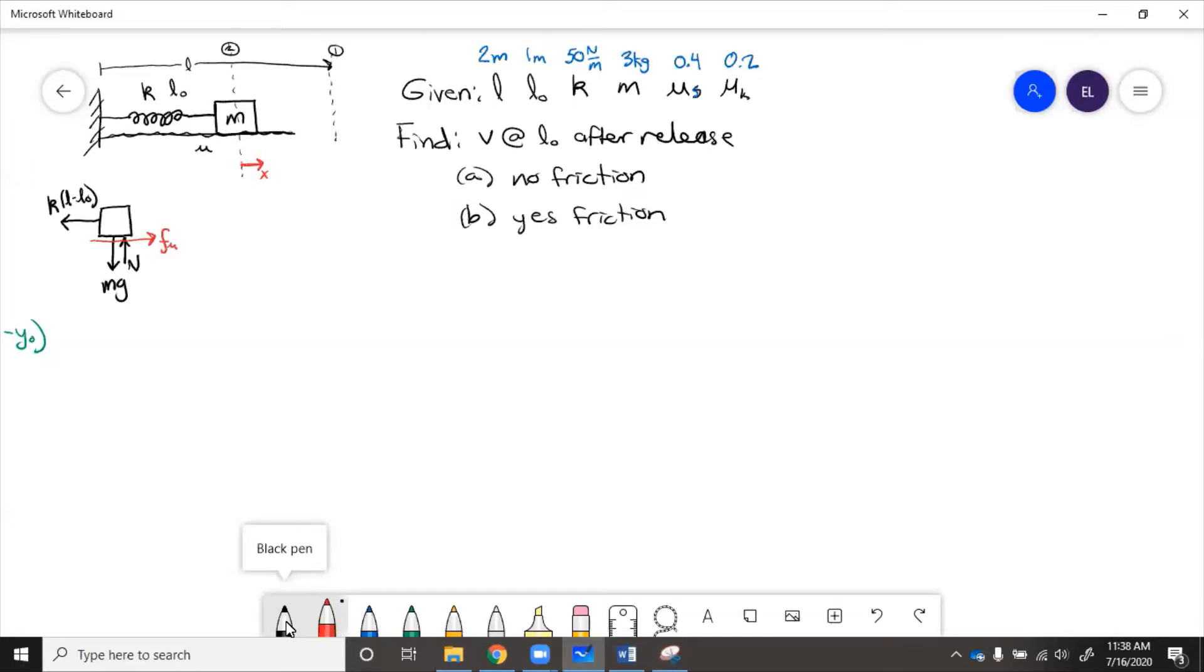And then we need to figure out equations. So let's say we know that spring energy is going to be 1 half times k times L minus L initial. And then kinetic energy equals 1 half mv squared. Gravitational energy equals mgh. And then friction, work by friction equals negative friction force times distance.